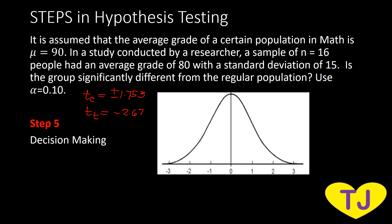Plotting on the curve: negative 1.753 is here on the left, and positive 1.753 is here on the right — those are our rejection regions. T sub T, which is negative 2.67, is located in this portion here, further into the left tail, which falls within the shaded rejection region. Since negative 2.67 is less than negative 1.753, we reject the null hypothesis.